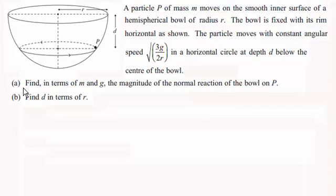So in part a, we've got to find in terms of m and g the magnitude of the normal reaction of the bowl on P, and then in part b find d in terms of r.